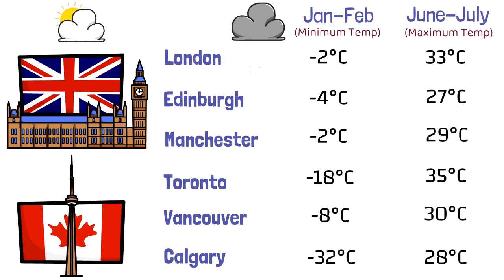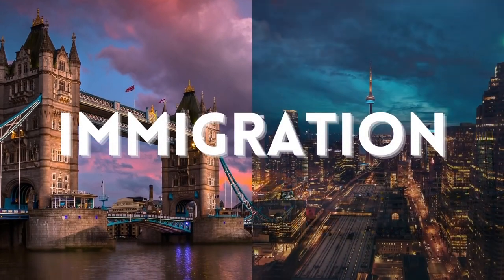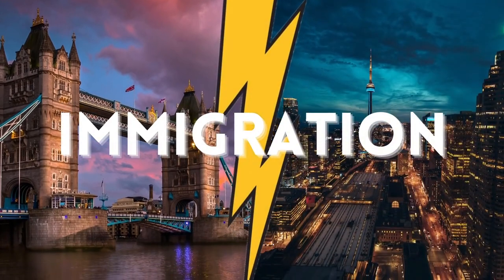Overall, Canada is much colder in January and February, but also warmer in June and July. Notice the transition: in London it goes from minus 2 to 33°C, while in Toronto it's minus 18 to 35°C. In the first few months in Canadian cities it can be difficult to adapt, whereas in UK it's a lot easier.